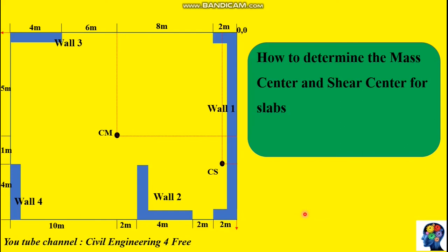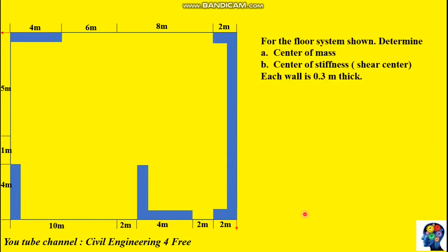Hello guys, welcome back to this channel. On today's video, you will see how to determine the mass center and shear center for the floor system below. First we'll calculate the center of mass, then we'll estimate the center of stiffness or shear center. We are provided with the following information: each wall has a thickness of 0.3 meters.